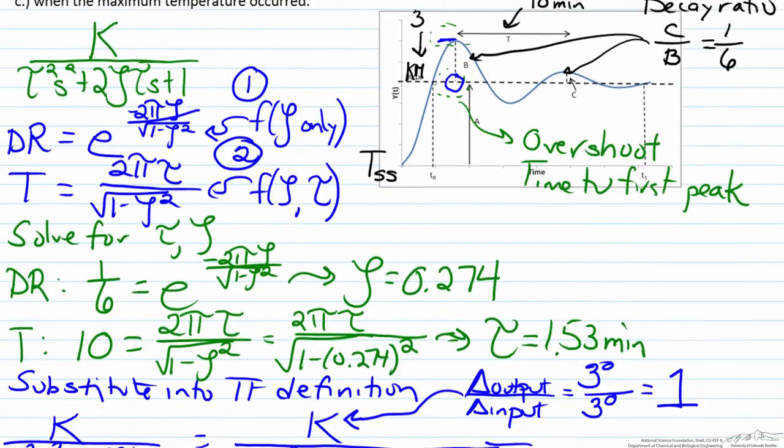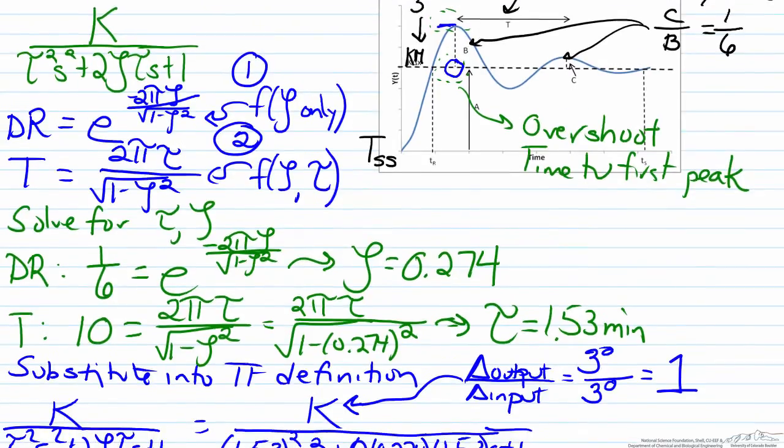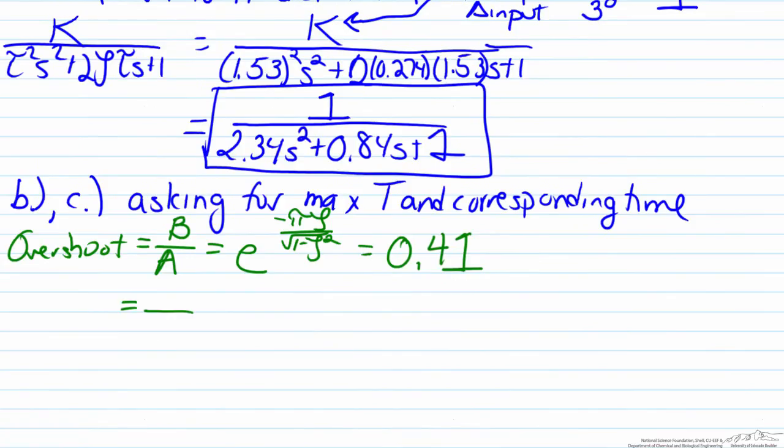If we look back at our figure we can see that b represents how much the peak exceeds the steady state of three, and a is the difference between the original value and the new steady state. So we know that the value of a, the distance between the starting point and the final point, is three degrees. And for b, that will be our maximum temperature minus the change in temperature, which as we know is three. So T max minus three degrees equals 0.41. T max is 4.23 degrees above the original temperature.